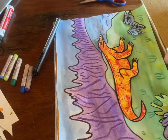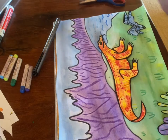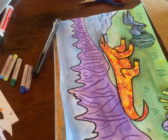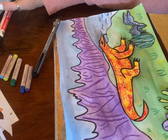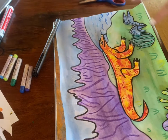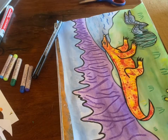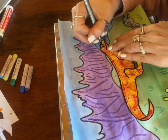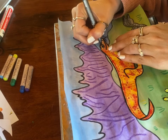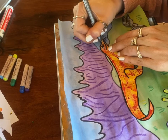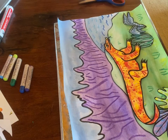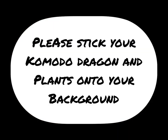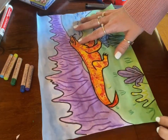Don't stick them down straight away — place them where you think they'll look good and overlap them a little bit to give it a sense of fullness. I'm going to stick down my dragon there. Looking at my paper, it does look a little bit empty, so I'd probably add in a few more little plants. You can also do some touching up if you've accidentally painted over where the marker was, just to make things stand out a little bit more. Please stick your Komodo dragon and plants onto your background.